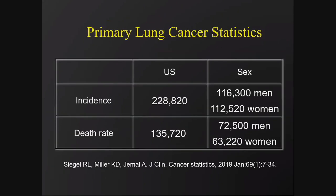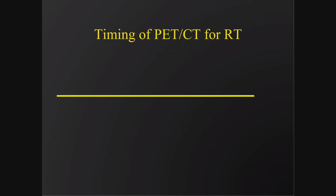First, let's talk about the epidemiology and primary lung cancer statistics in the US. The picture is pretty abysmal. Incidence is about 228,000 per year, fairly equally divided between men and women. The death rate is about 135,000, slightly higher in men at approximately 72,500 compared to about 63,000 in women.